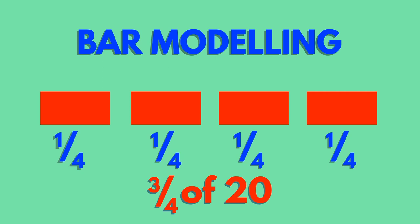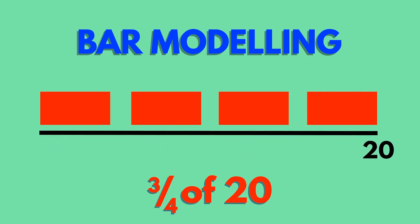We can calculate a fraction of a quantity by first drawing it in the bar, showing the length of the bar to be the quantity and then calculating the length of the shaded part.